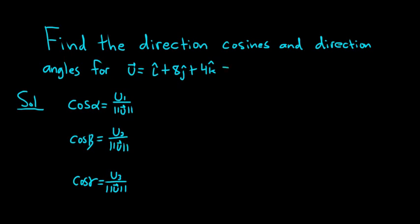Alright, let's write this vector in component form for clarity. There is a 1 here, so let's emphasize that. Then we have 8 and then we have 4. So this is our u1, this is our u2, and this is our u3.